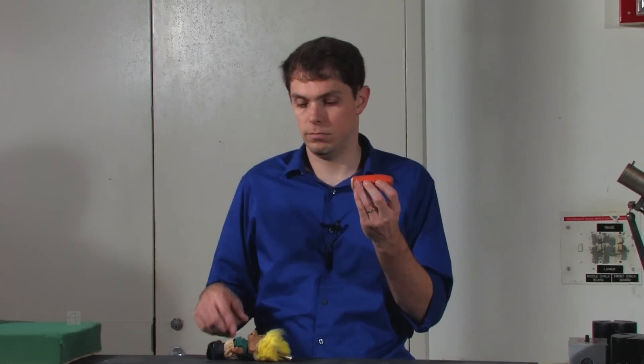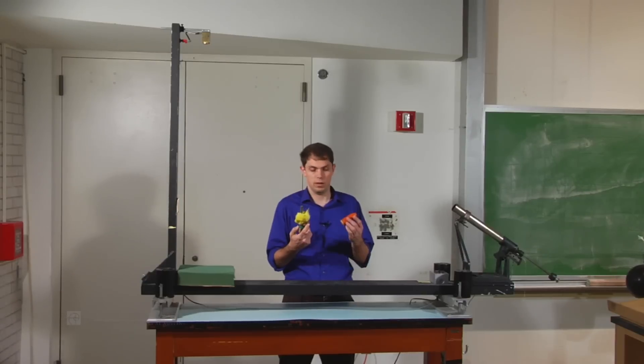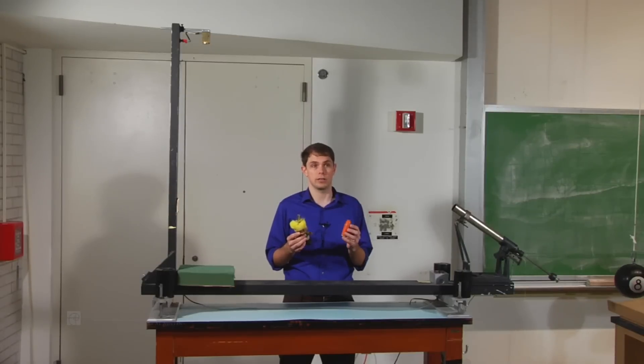In this demo we have a bullet and a monkey—at least that's what the classic experiment is. It's a monkey that's going to fall from a tree, and while the monkey falls, as soon as the monkey releases, we aim our gun with our bullet in it and shoot it at the monkey.